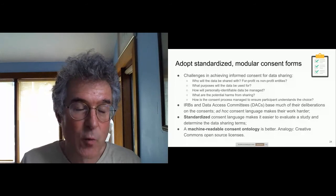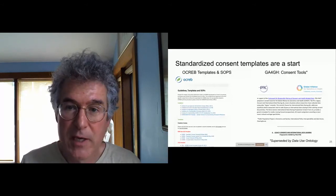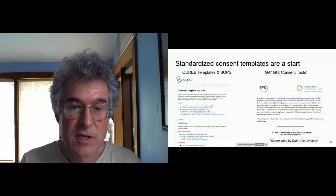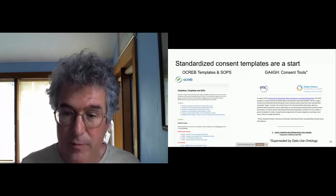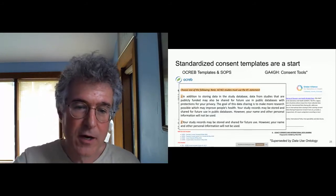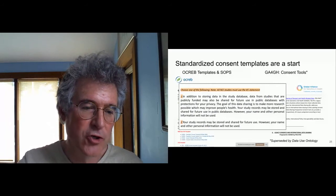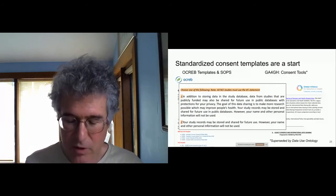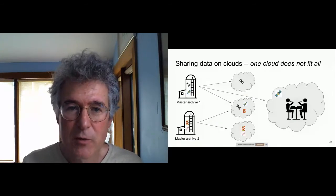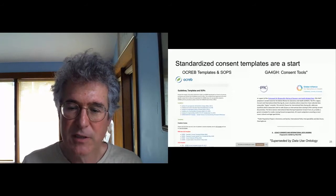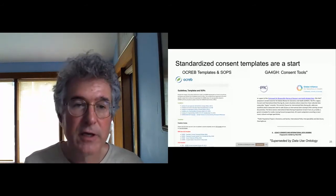There is already a well-established effort — spearheaded by individual IRBs as well as by international consortia — to create standardized patient consent templates. Two examples: one from OCREB, and one from the Global Alliance for Genomics and Health. These are templates that give you a multiple-choice format: for each part of the consent, you choose class 1, class 2, or class 3, with guidance on which to use. These can also be supplemented by an ontology of data usage, which I'll talk about a bit later.